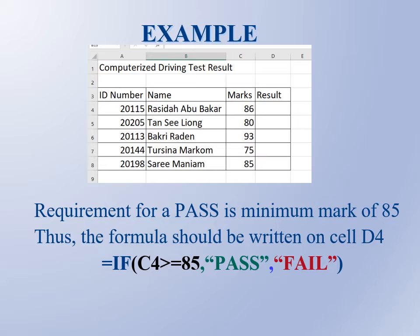If C4 is greater than or equal to 85, because it says minimum, 85 should be included. You write the mathematical symbol: greater than or equal to 85, comma, pass in inverted commas, comma. Pass means if the condition is true—C4 is 85 or more—the result will be passed.